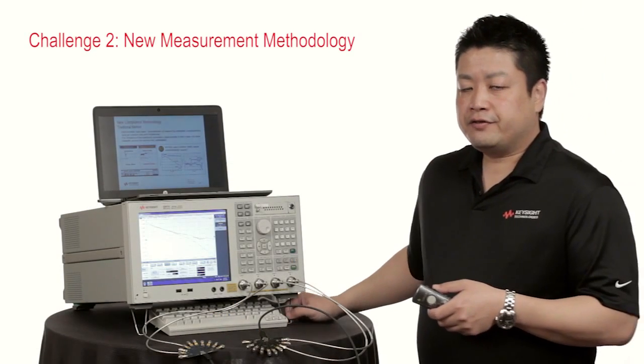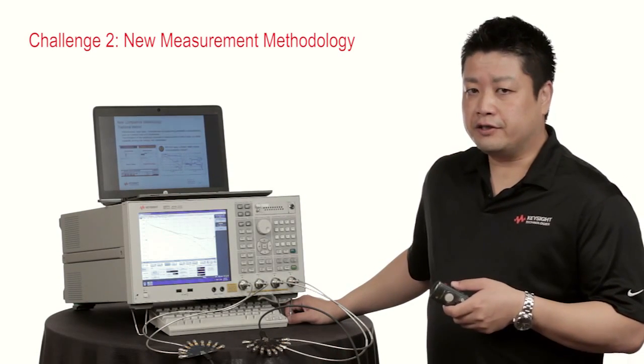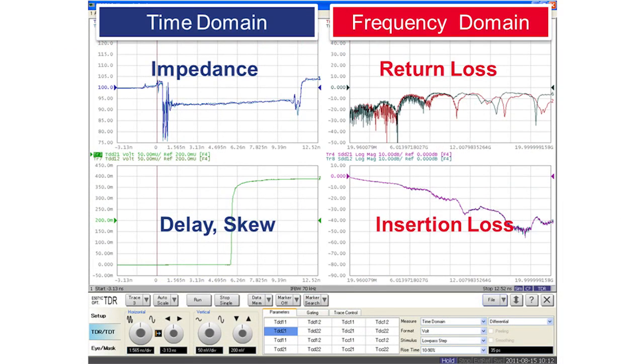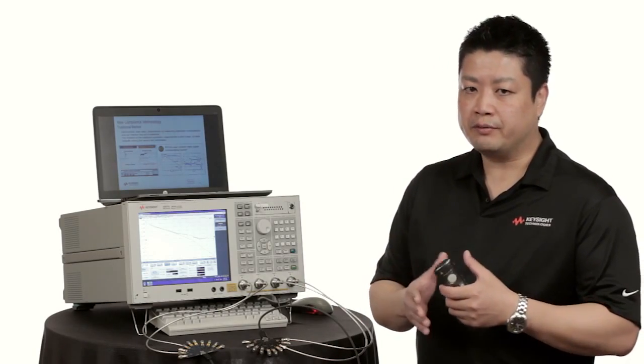Another challenge facing USB 3.1 is that the traditional method of characterization has its limitations. The traditional method consisted of measuring the impedance in time domain, insertion loss, and return loss in the frequency domain. The limitation of this method is that it doesn't allow for trade-offs between the different parameters.